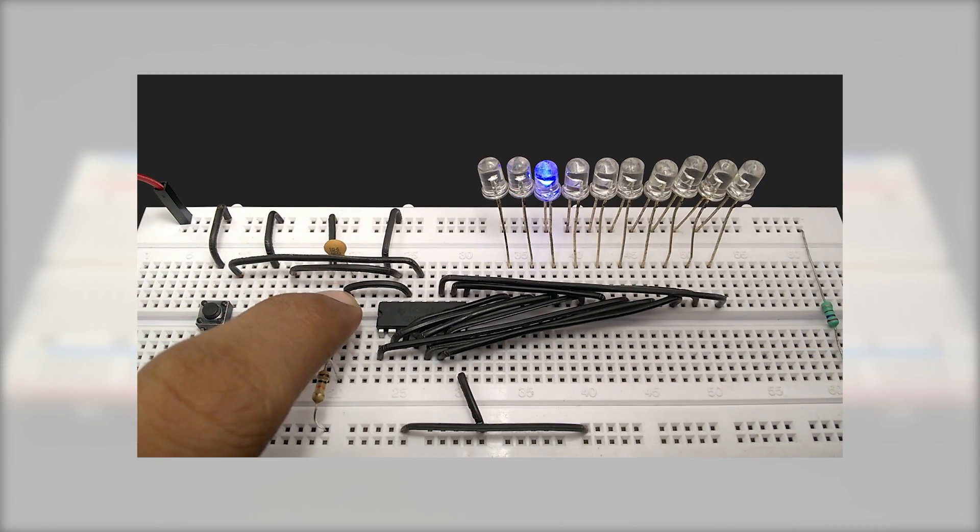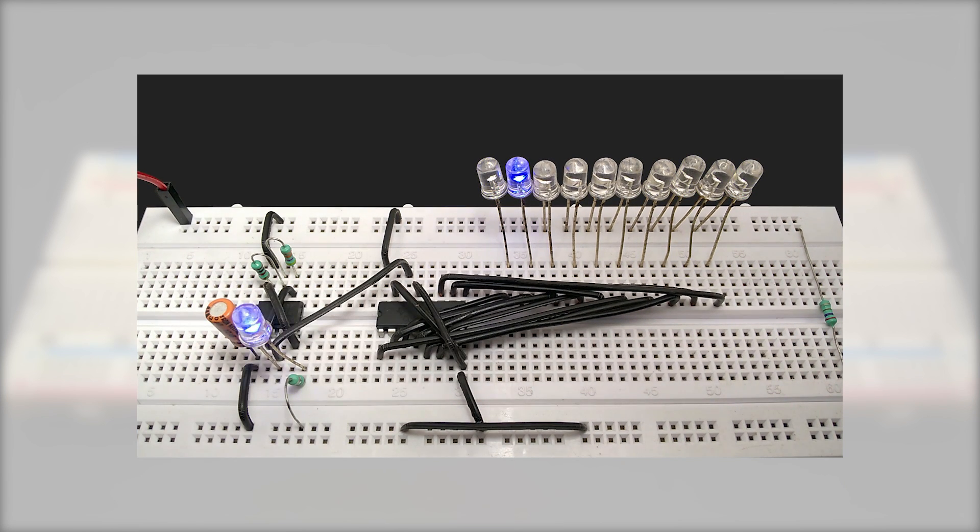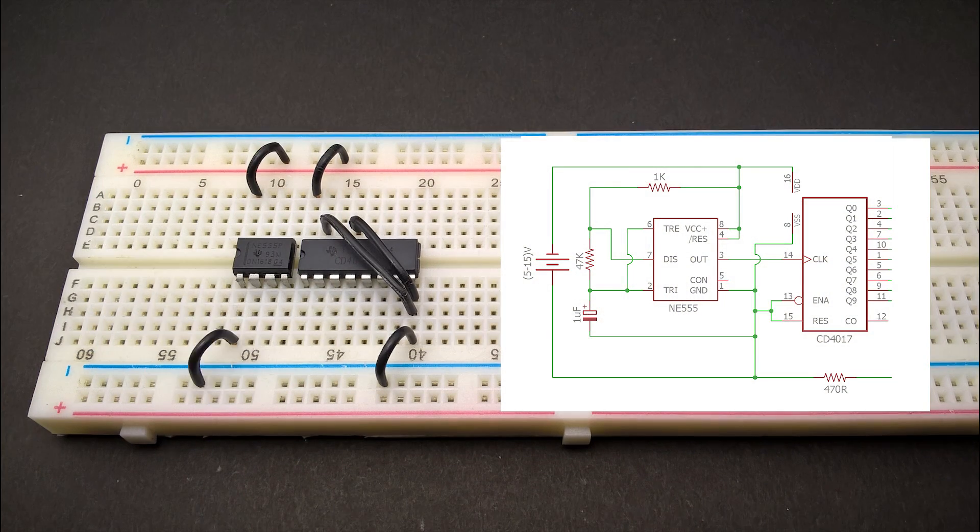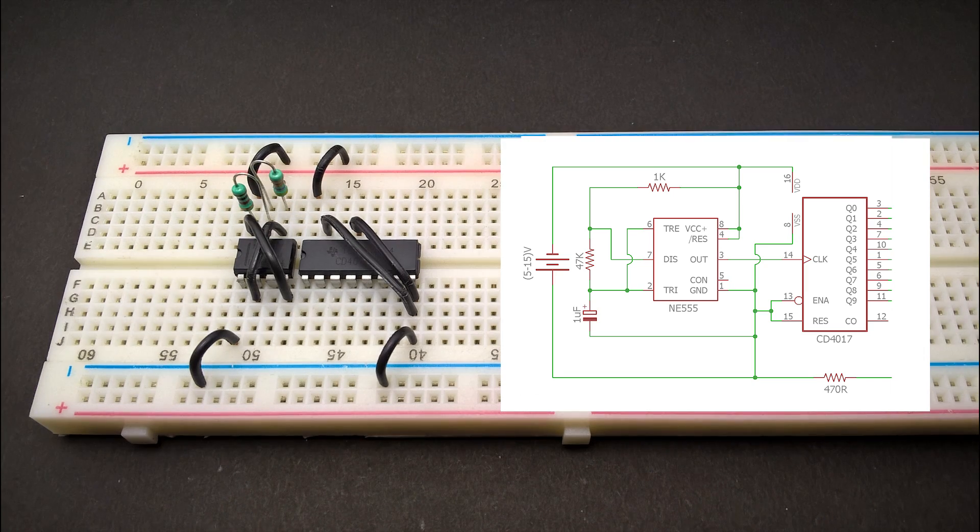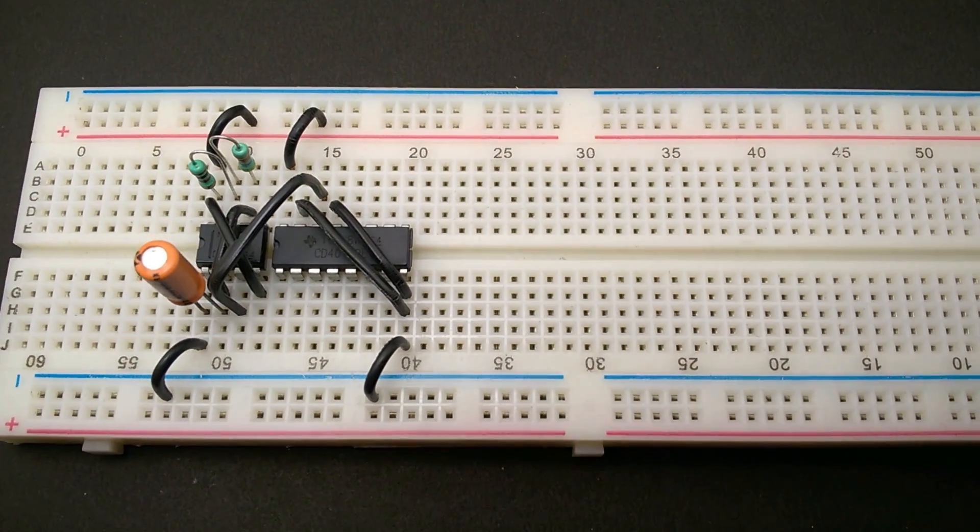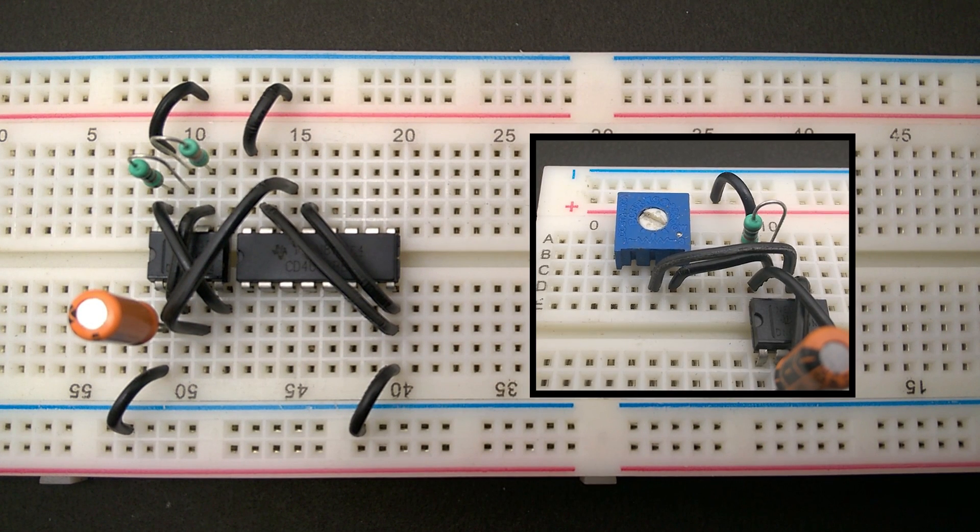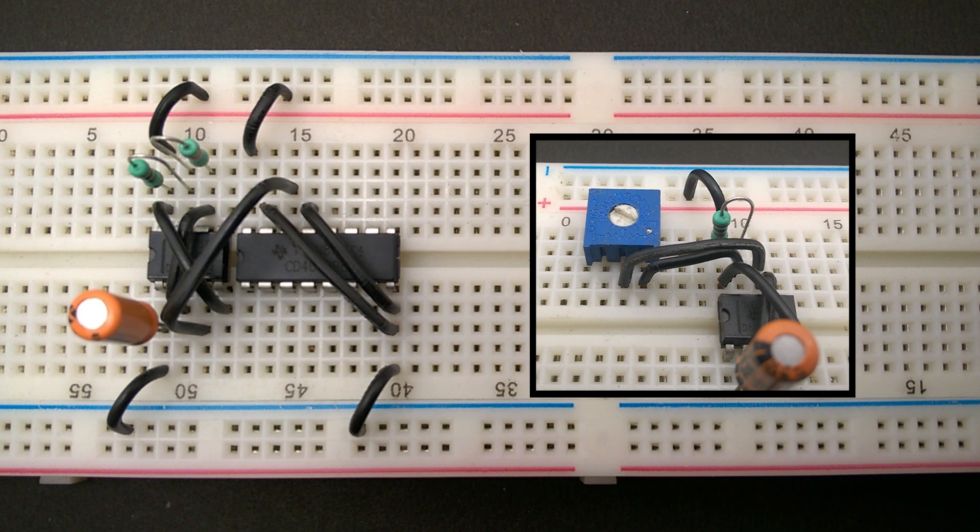Instead of manually giving a clock pulse to switch the outputs, we can use a 555 timer in astable mode to generate periodic highs and lows for us. Refer to the circuit diagram for the 555 timer connections. In case you wish to have a variable chasing speed, you can use a 100 kilohm potentiometer in place of the 47 kilohm resistor.